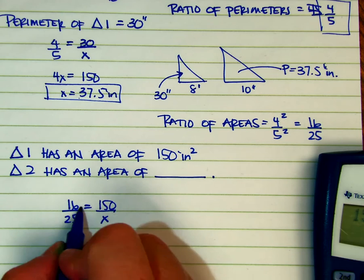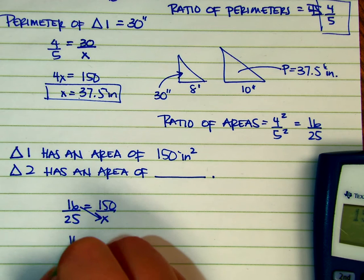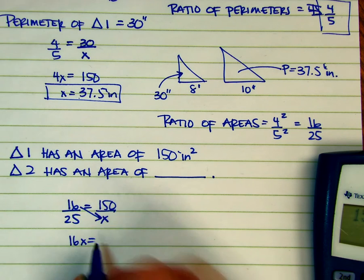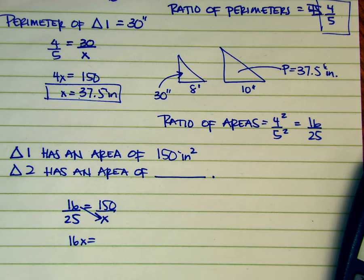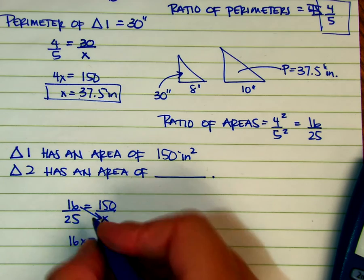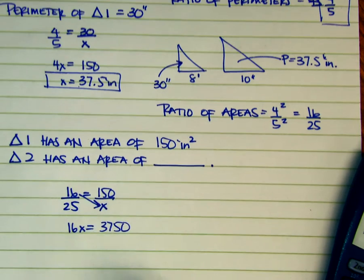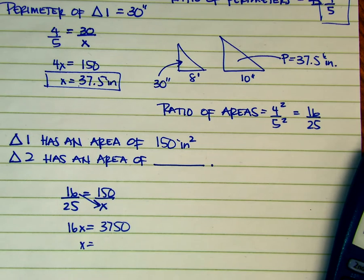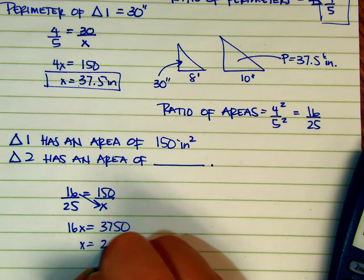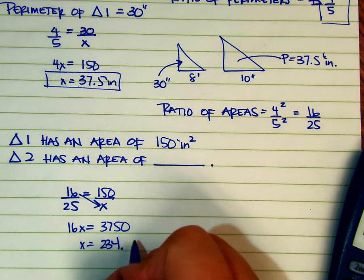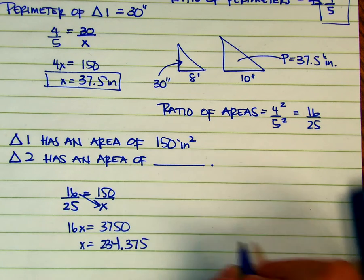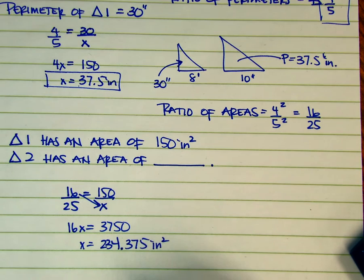So I'm right back to doing my means and extremes or cross products. So 16 times x is 16x. 150 times 25 gives me 3750. So x equals, divide that by 16, and I get 234.375, and that would also be inches squared.